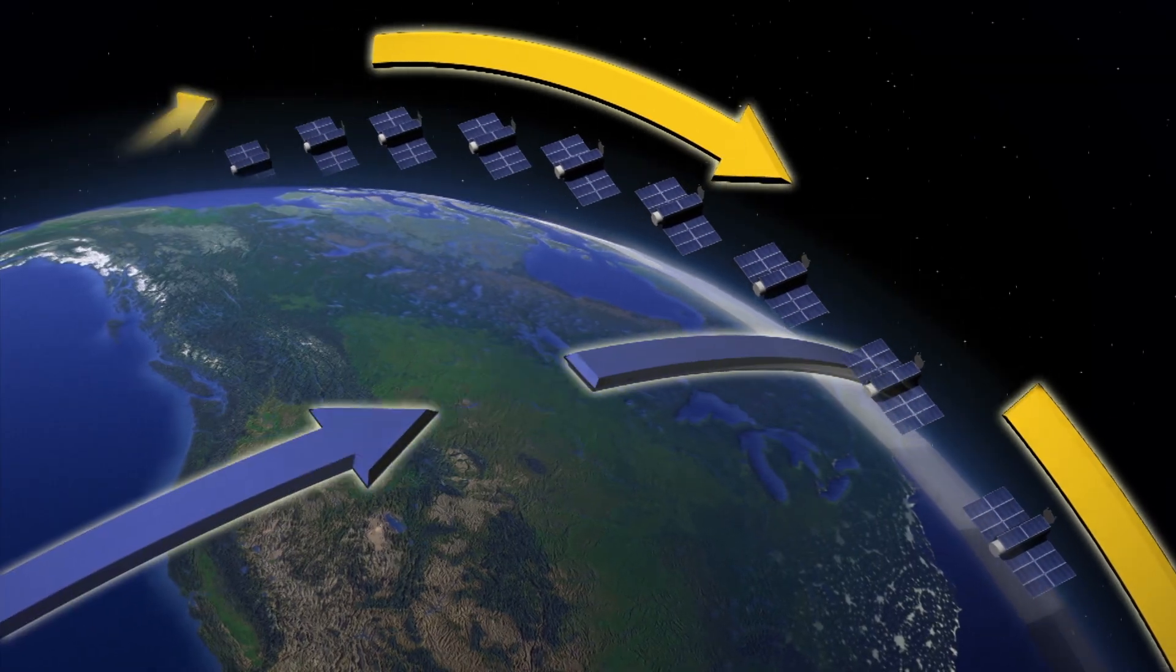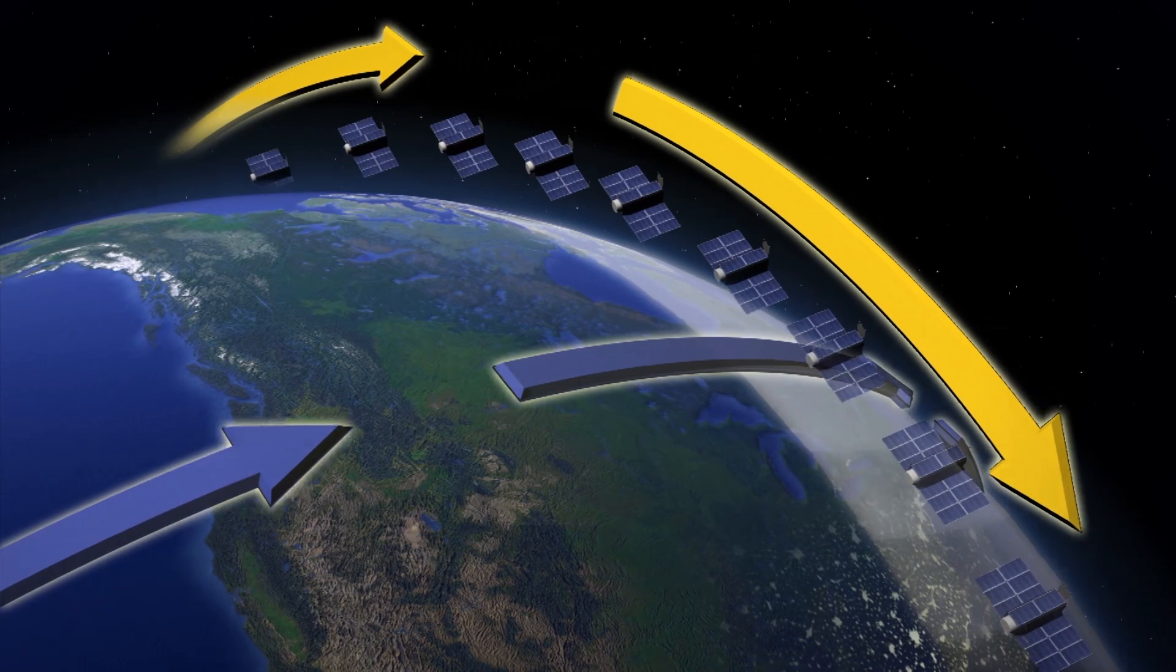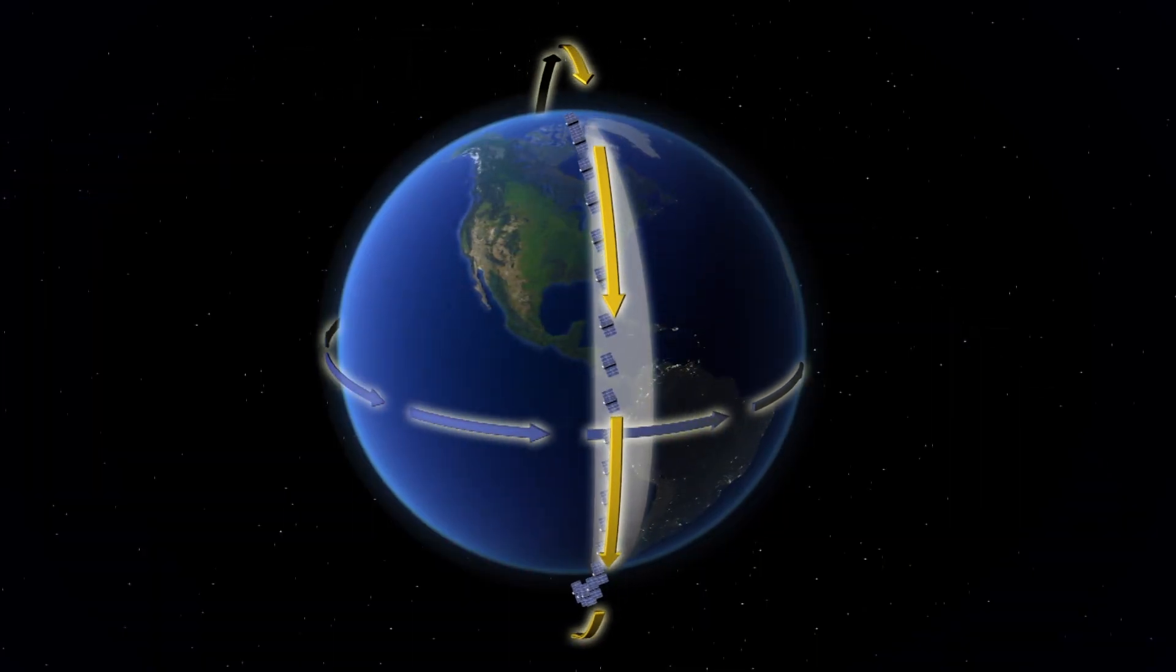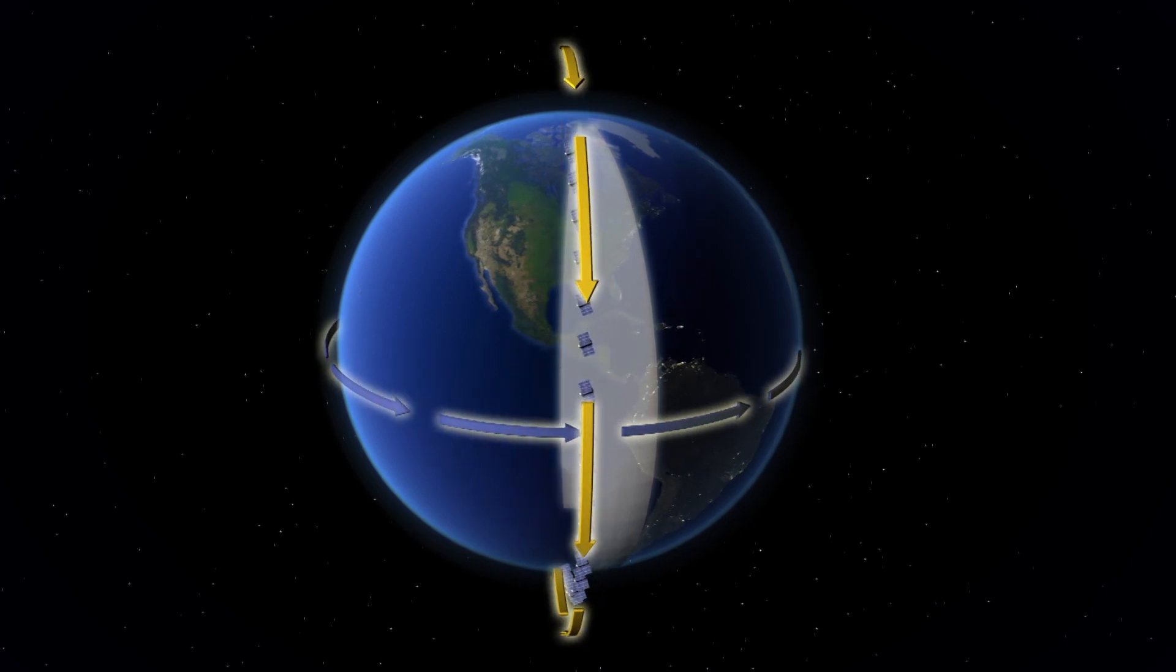Combined with 12 Dove satellites already in space, 100 satellites in total will fly north to south as the Earth rotates beneath them to form a line-scanner constellation of satellites.